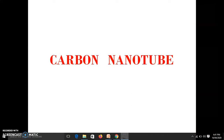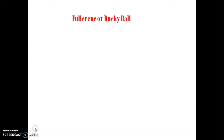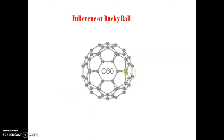One allotrope of carbon you might know is the buckyball or fullerene. It is made up of 60 carbon atoms, and these 60 carbon atoms are interconnected into hexagons. There are 12 pentagons and 20 hexagons. The carbon atoms are connected by covalent bonds into pentagons and hexagons, giving it a shape like a soccer ball — that is why it is called a fullerene or buckyball.